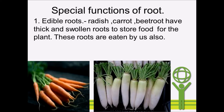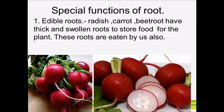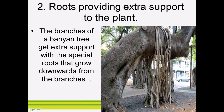Beside the tap root and fibrous root, there are some roots which are very special. One is edible root — radish, carrot, and wheat root have thick and swollen roots to store food for the plant, and these roots are also eaten by us. Second, special roots that provide extra support to the plant. The branches of a banyan tree get extra support with special roots that grow downward from the branches.